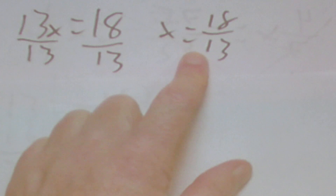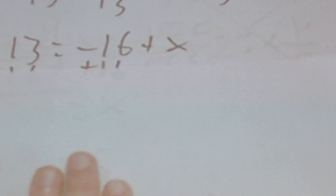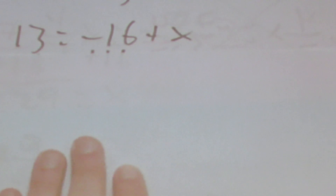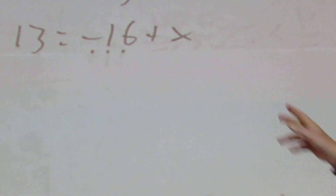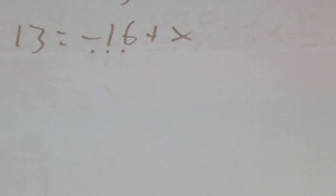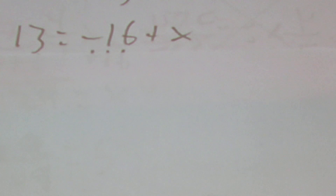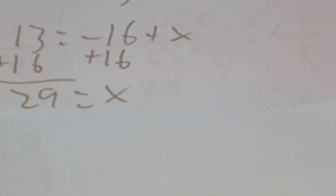Then we'll have 13 = −16 + x. Since we're subtracting 16, the opposite is adding, so we add 16 to both sides and get x = 29.